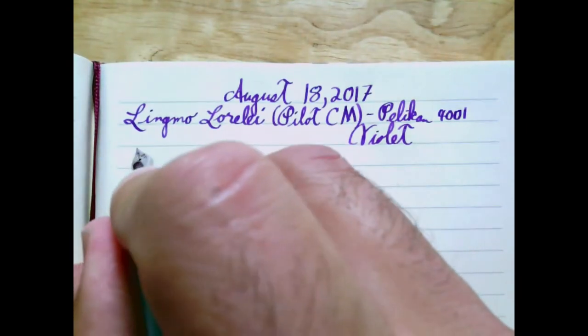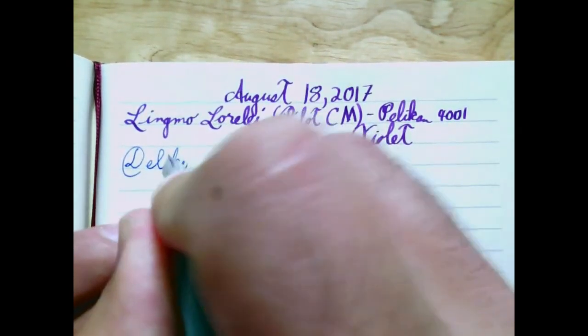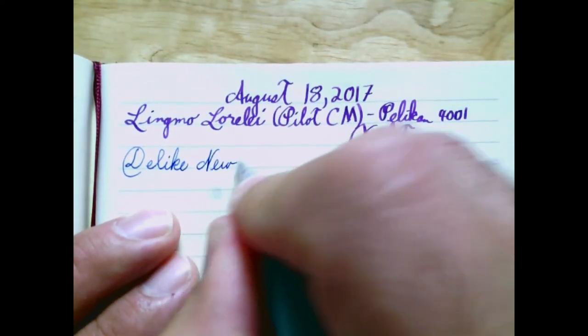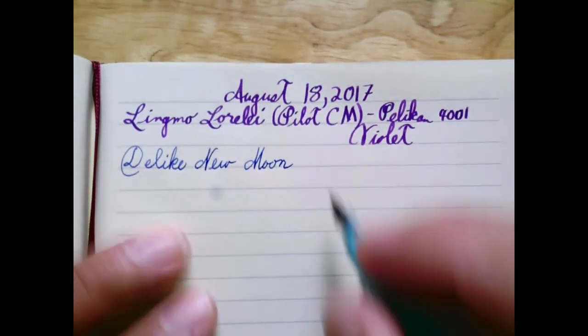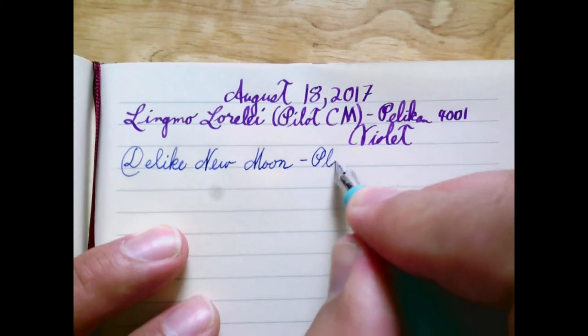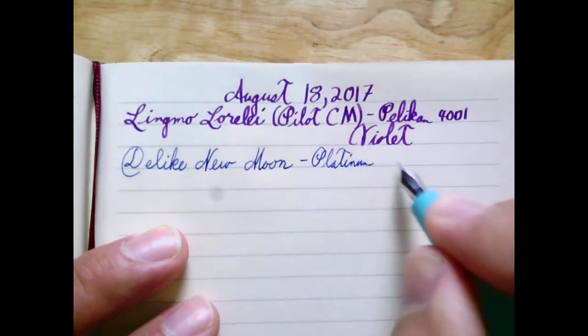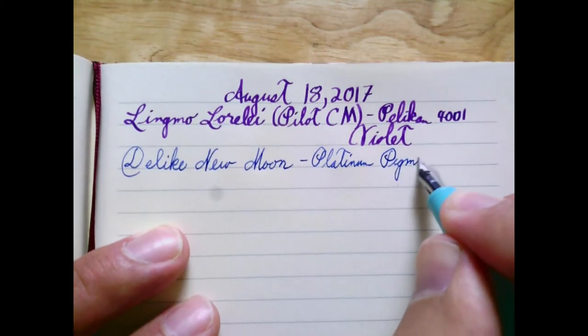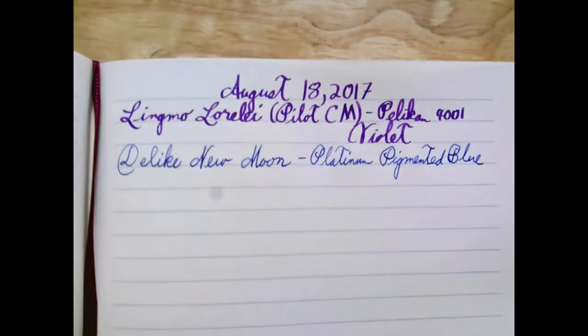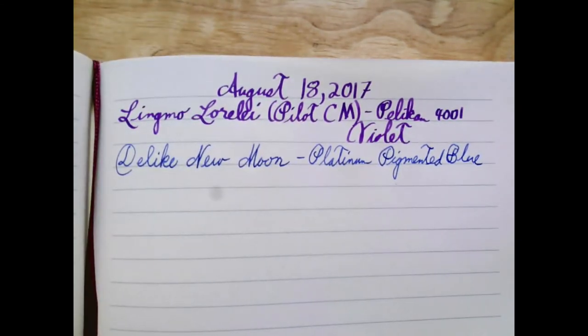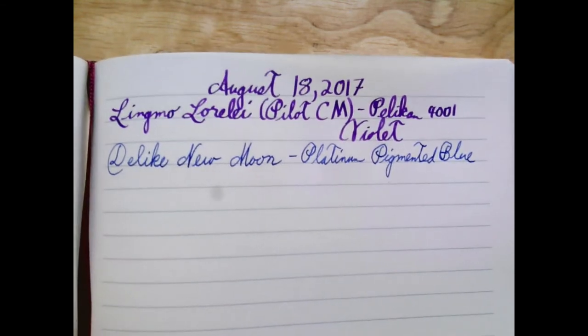Moving onward, my Delight New Moon, one of the four video reviews I plan to film this weekend. This is a very nice extra fine nib. My ink is Platinum pigmented blue, part of my experiment with pigmented inks. I'm not especially thrilled with any of the Platinum pigmented colors except for the black.